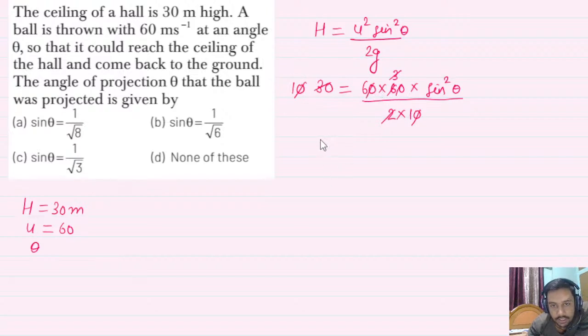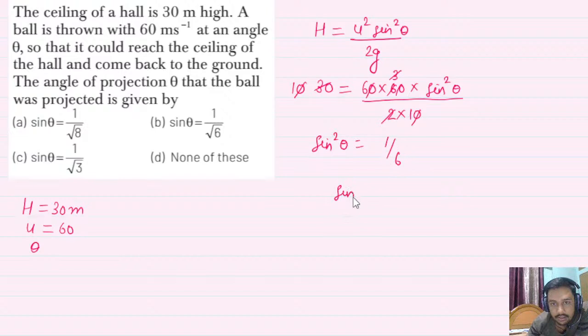You will get sin squared theta. The 6 goes to the denominator, so it becomes 1 by 6. Therefore sin theta equals under root of 1 by 6.